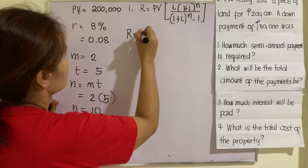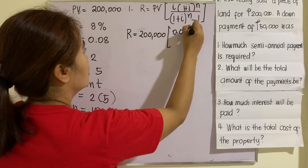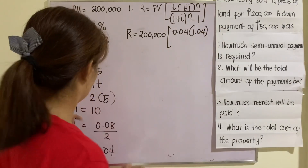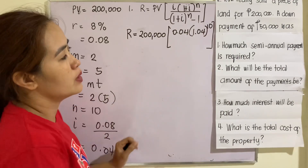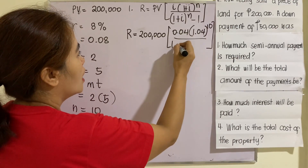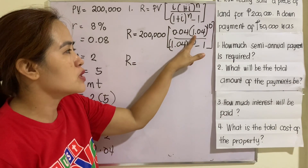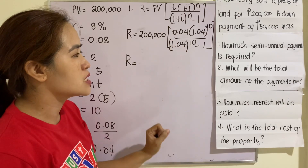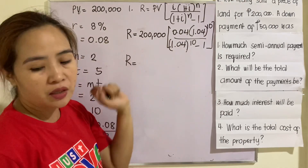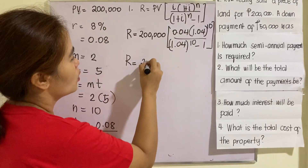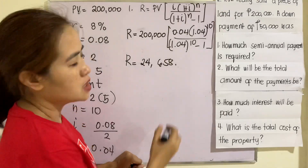Solving for r: r equals 200,000 multiplied by 0.04 times (1.04) raised to 10, divided by (1.04) raised to 10 minus 1. Press 1.04 raised to 10, multiplied by 0.04, equals, divided by open parenthesis 1.04 raised to 10 minus 1 close parenthesis, then multiply by 200,000. You will get r equals $24,658.90, which is the required semi-annual payment.